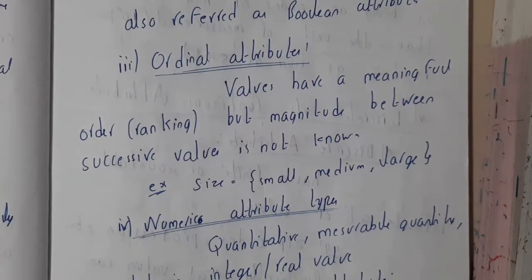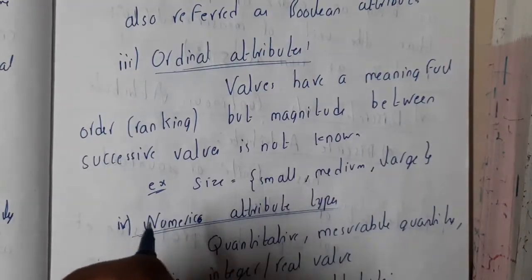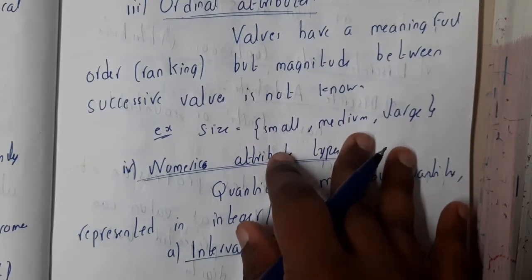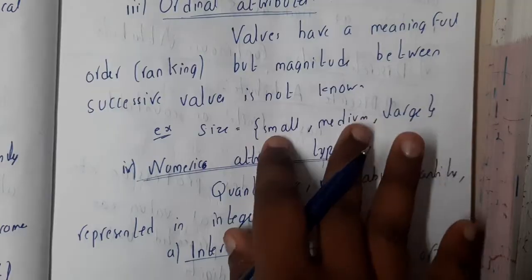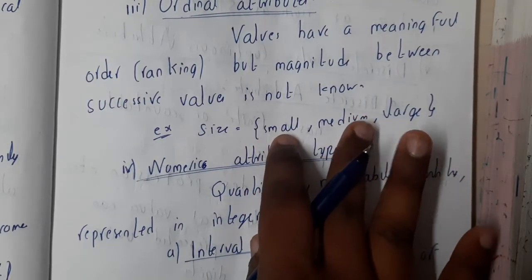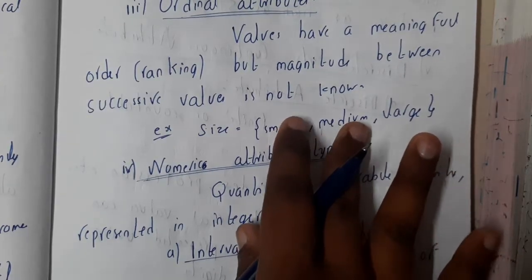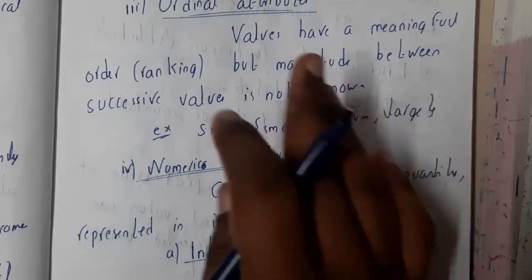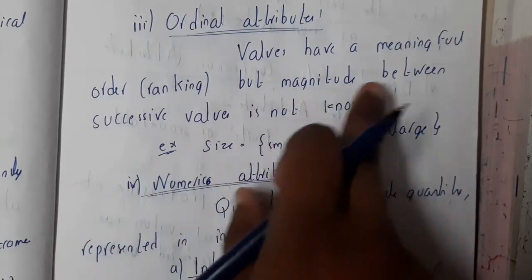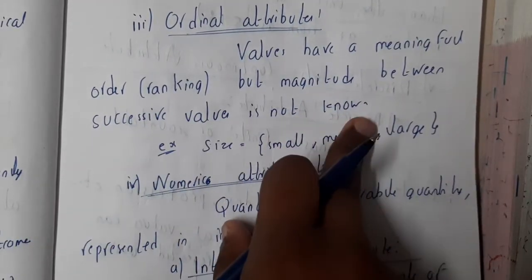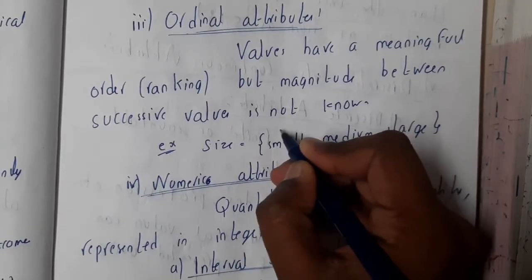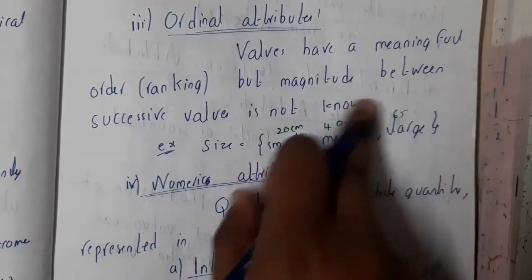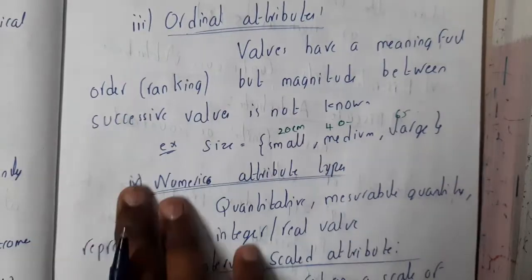The third type is the ordinal attribute. Take the example of a pizza: it could be small, medium, or large. If you observe, there is some relation between the pairs — medium is a bit larger than small, and large is a bit larger than medium. They have a size relation. Values have a meaningful order or ranking, but the magnitude between successive values is not known. For instance, small might be 20 cm, medium 40 cm, and large 65 cm — there is some increasing relation.